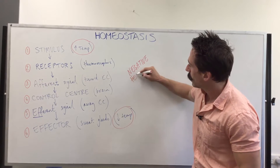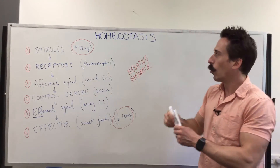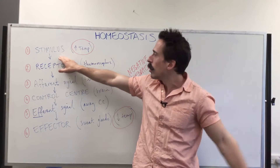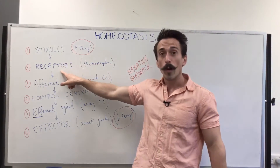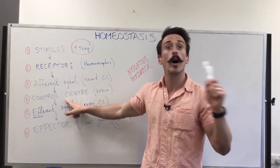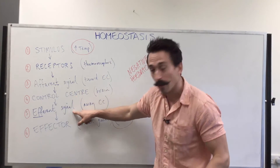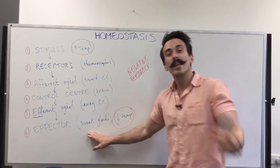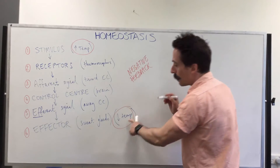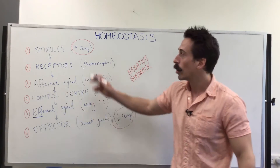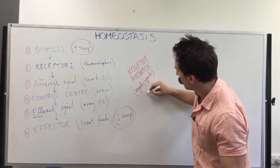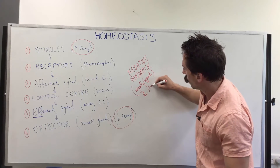A lot of students get caught up with the term 'negative' thinking it always has to go down — that's not true. If we flip this and say the stimulus was a very cold day, minus 30 degrees Celsius, the stimulus this time is a drop in temperature. Thermoreceptors pick this up, send it via an afferent signal to the control center — the brain. The brain says it's too cold, I need to warm up. It can shiver — telling muscles to contract and relax. It sends an efferent signal to the effector, which would be the muscles, the muscles shiver, and the outcome is an increase in temperature. That's still negative feedback, because in negative feedback the outcome negates or does the opposite of the stimulus.